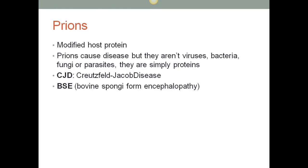BSE is caused by a unique transmittable agent classified as a prion. Prions are a form of protein that either self-replicate or somehow convert normal brain proteins into abnormal ones. Prions are also believed to be the cause of other human spongiform encephalopathies such as Kuru (K-U-R-U) and Creutzfeldt-Jakob disease, or CJD. Kuru was first observed in the early 1900s among ritualistic cannibals in Papua New Guinea but disappeared in 1960 when cannibalism stopped.